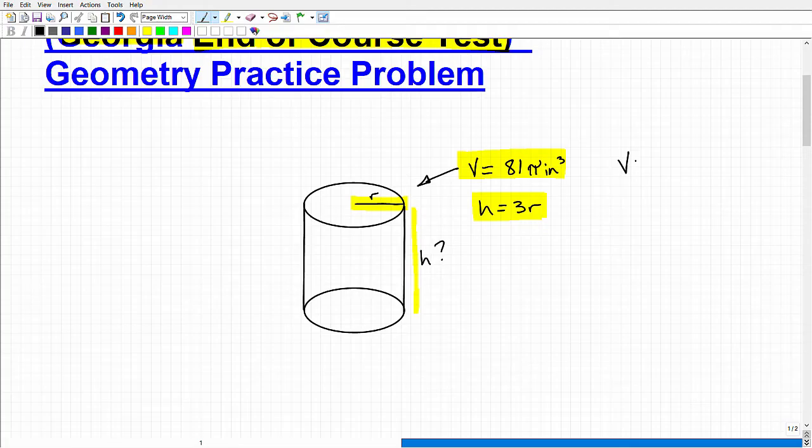So the formula for a volume of a cylinder is volume equals pi R squared times H. So that's the volume formula for the volume of a cylinder. You're going to need that in order to solve this.